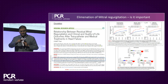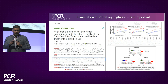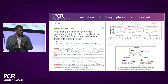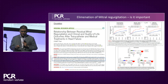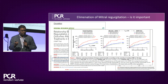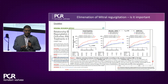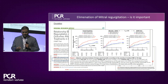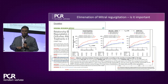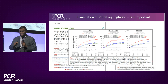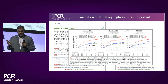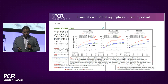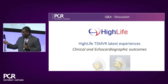Referencing a Circulation paper on MR reduction: regardless of whether patients were in the medical arm or device arm, those with 3-4+ MR at 30 days did poorly over follow-up, while those with 2+ or 1+ MR at 30 days did very well. Reducing MR significantly with an increase in stroke volume should translate into better clinical outcomes.